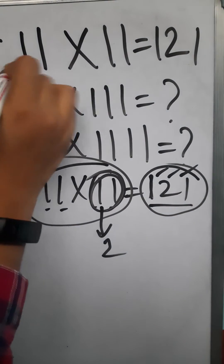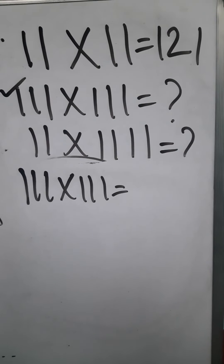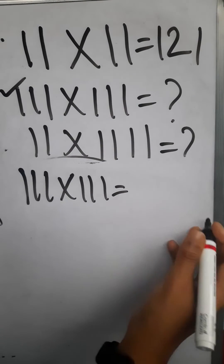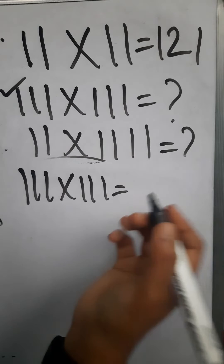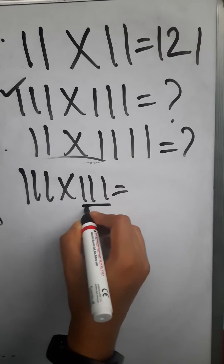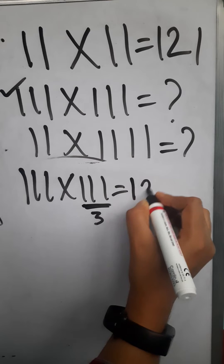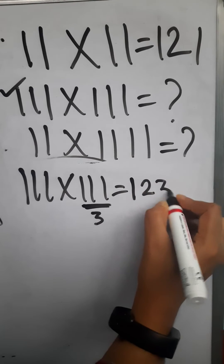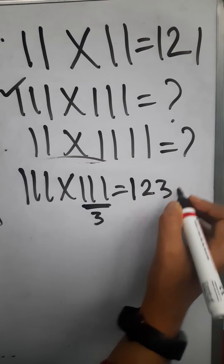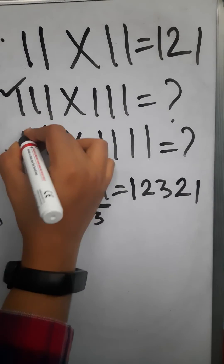In the next case, the total number of digits is 6, so the multiplicative result should be of 5 digits. Here the minimum number of digits of one number is 3, so it will increase from 1 to 3 and then decrease from 3 to 1.